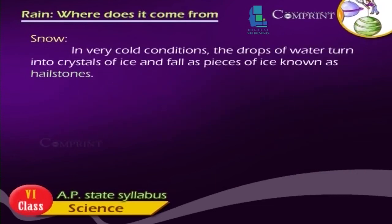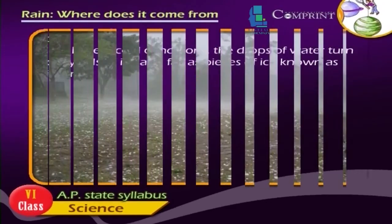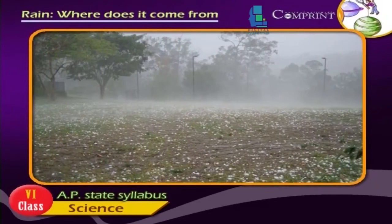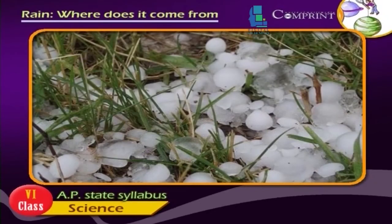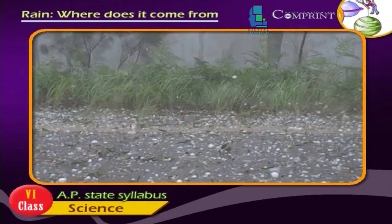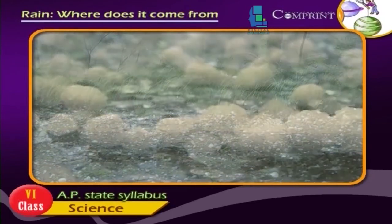Snow: In very cold conditions, the drops of water turn into crystals of ice and fall as pieces of ice known as hailstones.